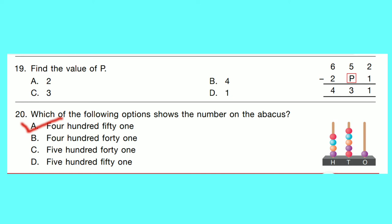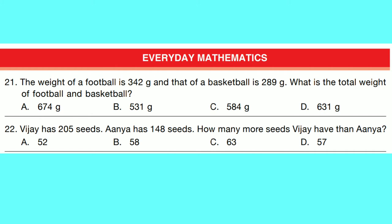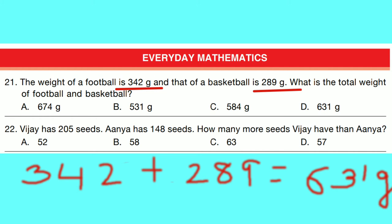Question number 21: The weight of a football is 342 g and that of a basketball is 289 g. What is the total weight of the football and basketball? Adding both, we get 631 g. Option D is correct.